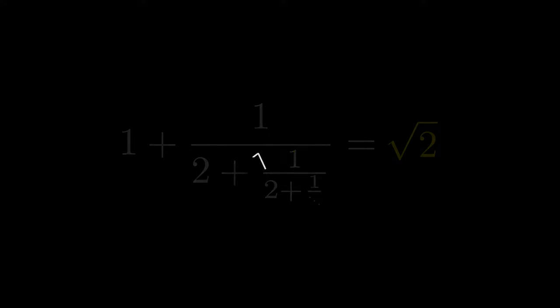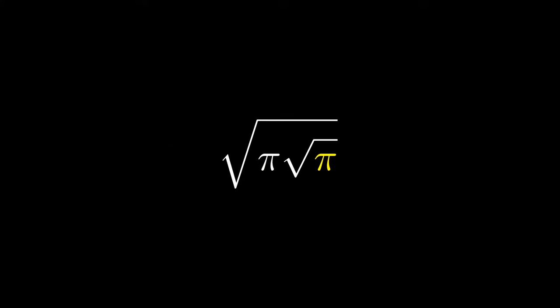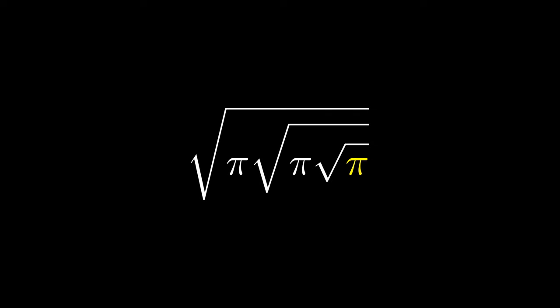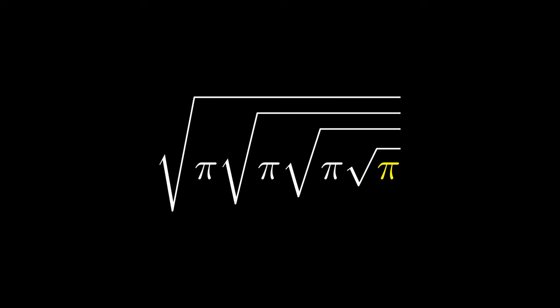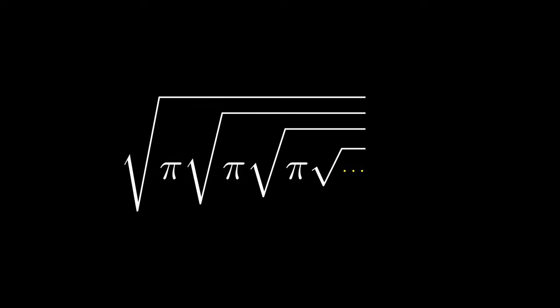Speaking of square roots, let's start with the square root of pi, multiply the square root of pi to that, multiply the square root of pi in that, and keep going on all the way to infinity. What is the result of this nested square root, also known as nested radicals? The answer, surprisingly, is pi.